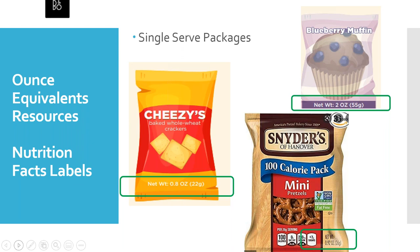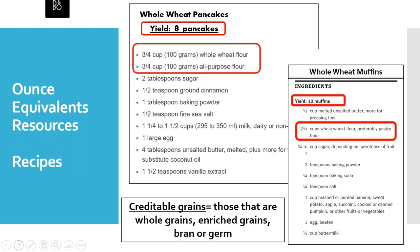For single serving packages, you may find the weight directly on the front of the individual package itself since they are single serving packages. Next, let's look at recipes. If you make homemade grains from scratch, you'll need to save your recipes. Your recipes must include the amounts of creditable grains contained in the recipe as well as the number of servings the recipe makes. Remember that creditable grains are those that are whole grains, enriched grains, bran, or germ.